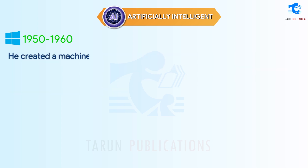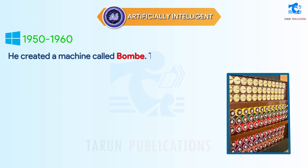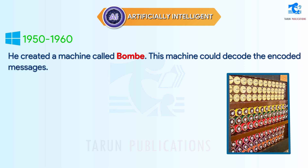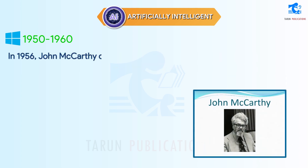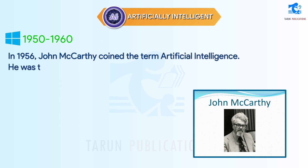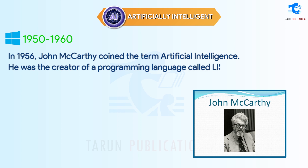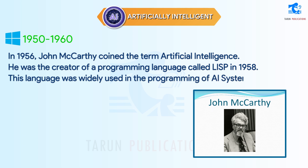He created a machine called Bombe. This machine could decode encoded messages. It was one of his greatest achievements. In 1956, John McCarthy coined the term Artificial Intelligence. He was the creator of a programming language called Lisp in 1958. This language was widely used in the programming of AI systems.